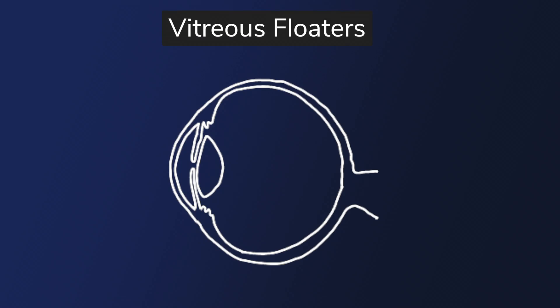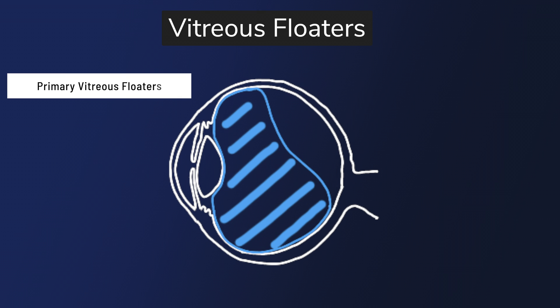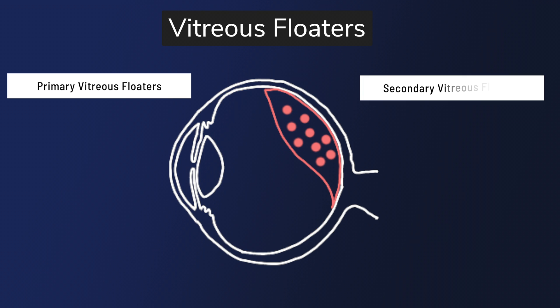You can largely divide vitreous floaters into two categories: those that are endogenous to the vitreous body, known as primary vitreous floaters, and those that are exogenous to the vitreous body, known as secondary vitreous floaters. Primary vitreous floaters are formed by the collagen fibrils that make up the vitreous humor. However, over time as we age, they become more numerous, thickened, and irregular — which is why light scatters in different directions, causing shadows.